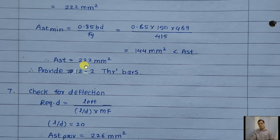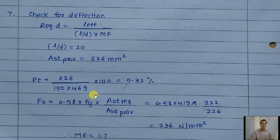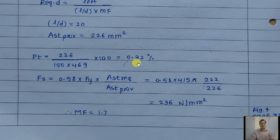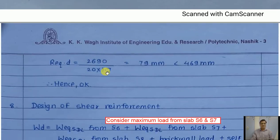Provide 2 bars of 12 mm diameter: area = 2 × 113 = 226 mm². For deflection check, for a simply supported beam l/d ratio is 20. AST provided = 226 mm², percentage steel = 0.32%, f_s = 0.58 × fy × (AST required / AST provided) = 236 N/mm². Modification factor from Figure 4 = 1.7. Required depth = l / (20 × 1.7) = 79 mm only, whereas provided is 469 mm. Hence safe.